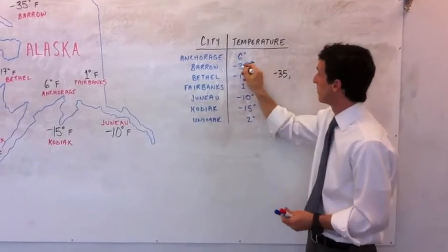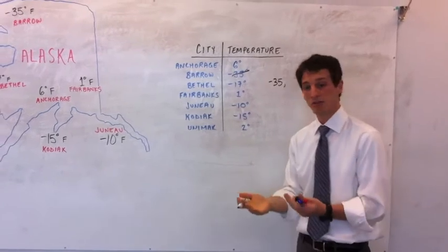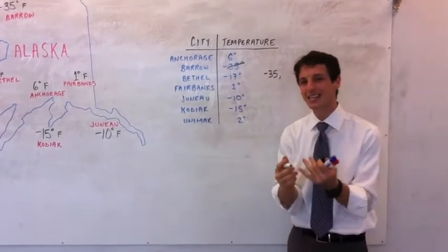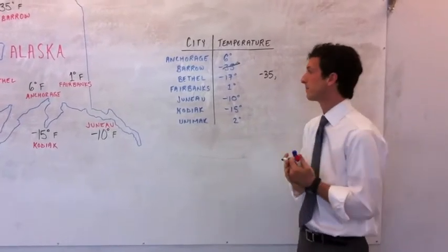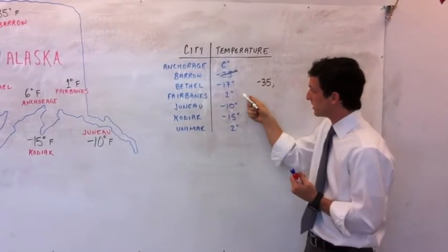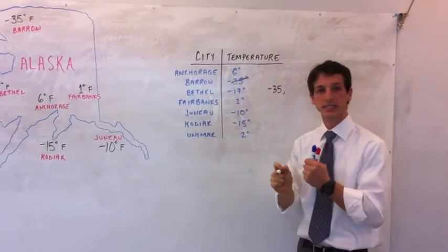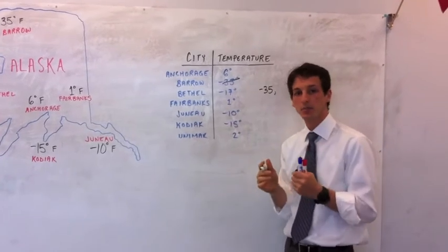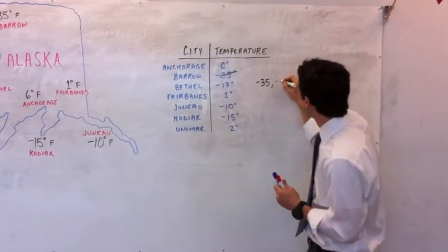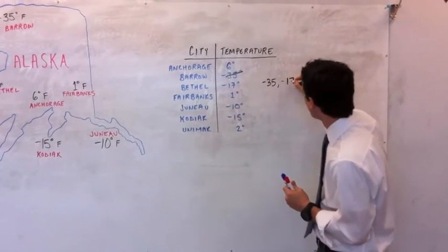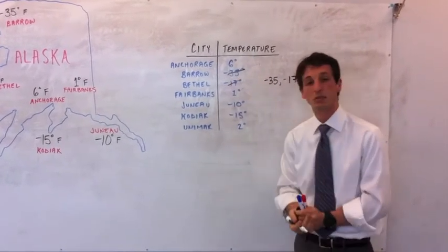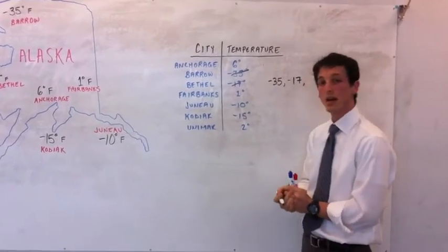Now I'm going to cross that off because we've used it and move on. Now let's find the next coldest temperature. The next coldest temperature, negative 17. That's going to be pretty cold. Write that there. Cross it off the list because we've already used it. Moving on.